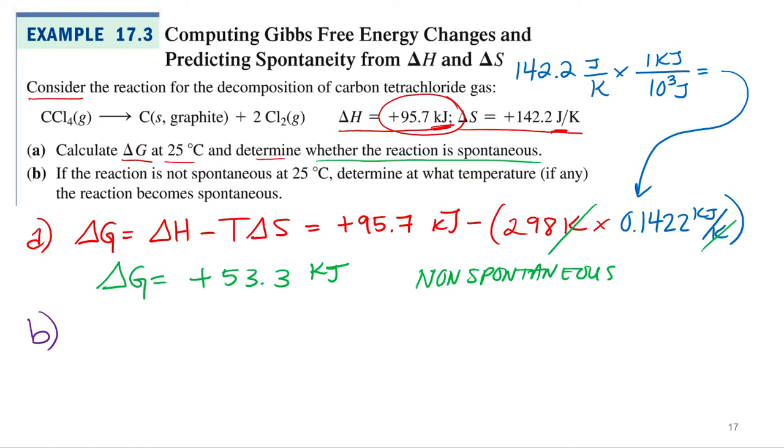All right. And that would be at equilibrium. So that's like the tipping point. Whenever delta G equals zero, that's when it can turn spontaneous or non-spontaneous, depending on increasing or decreasing the temperature. So to solve for the temperature at which it becomes spontaneous, you set delta G equal to zero and solve for the temperature.